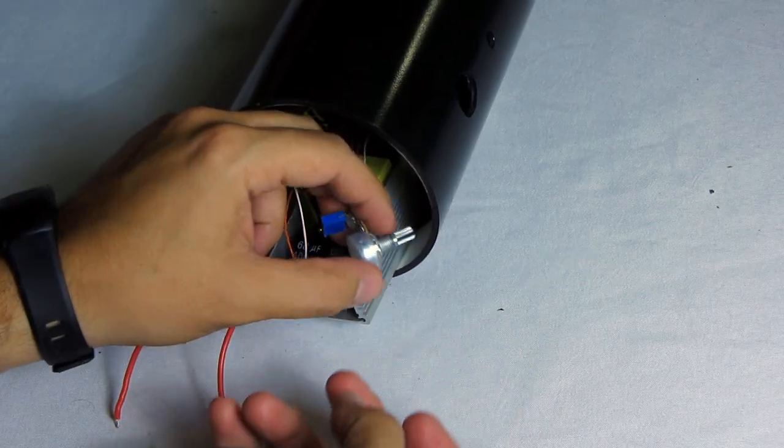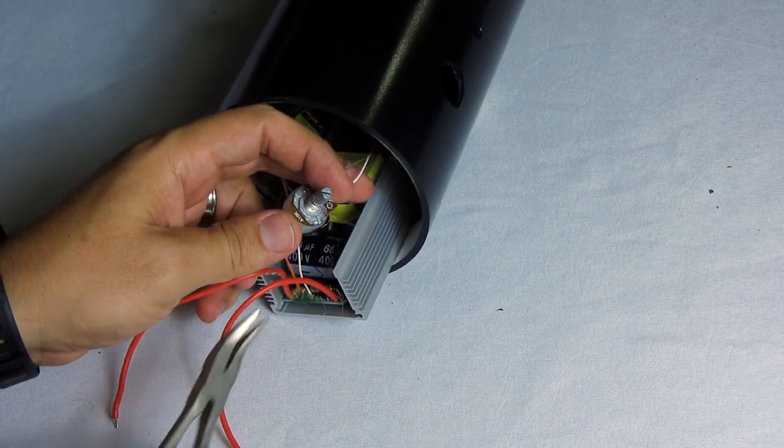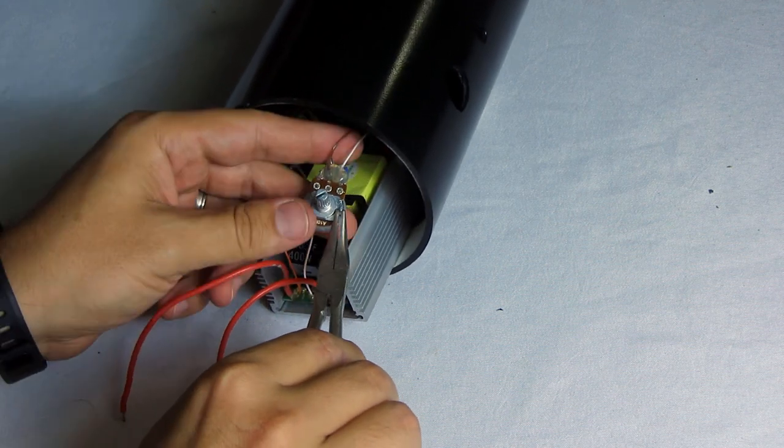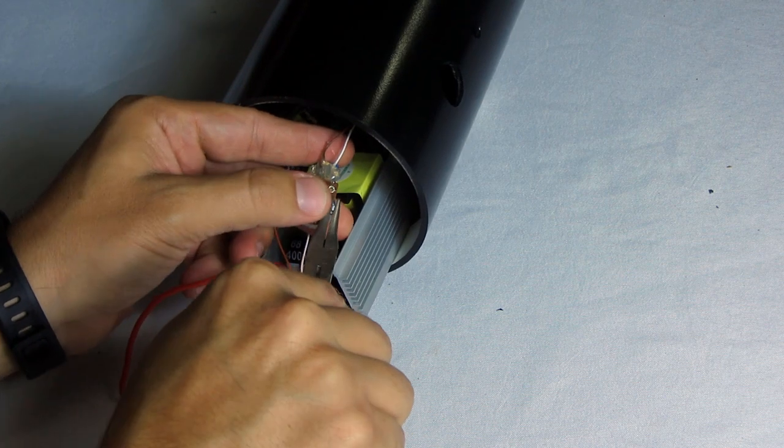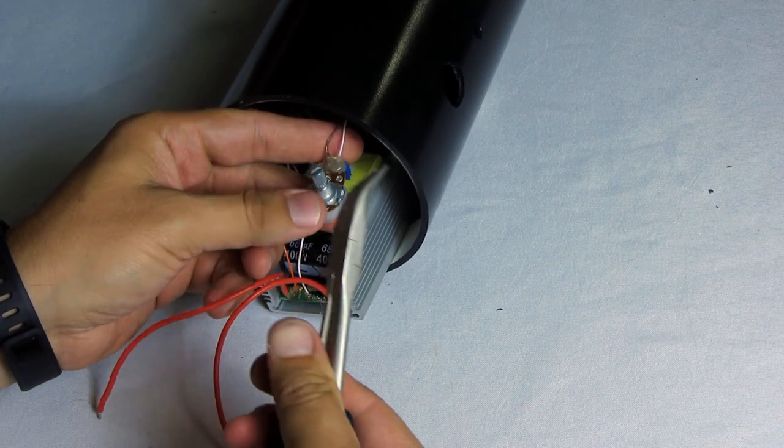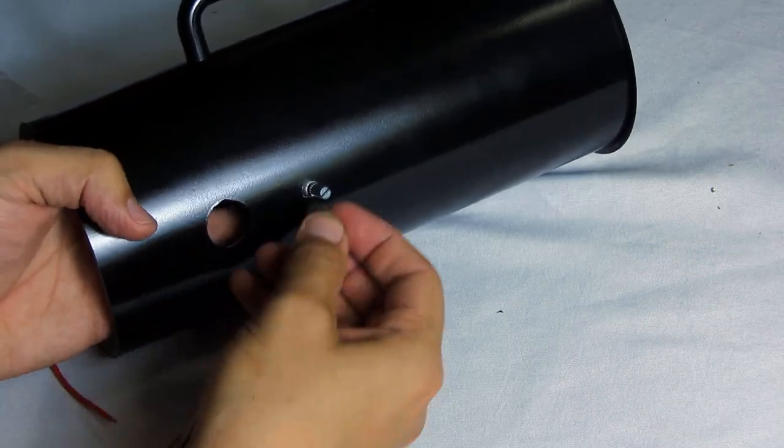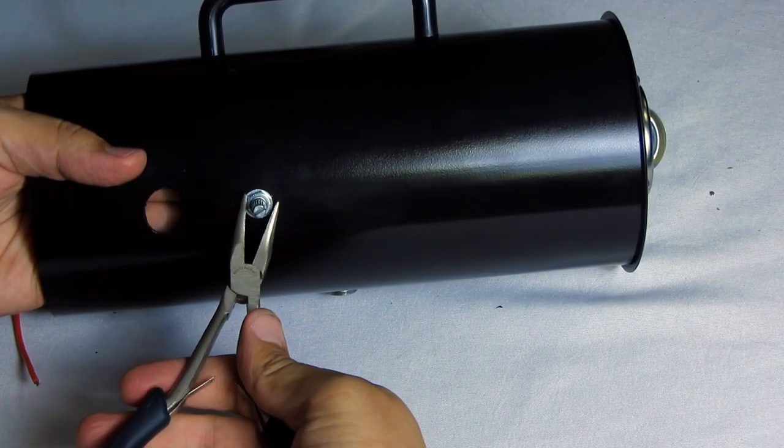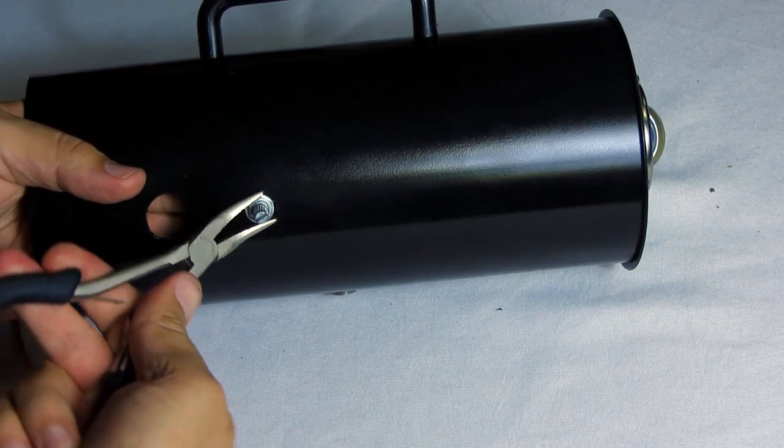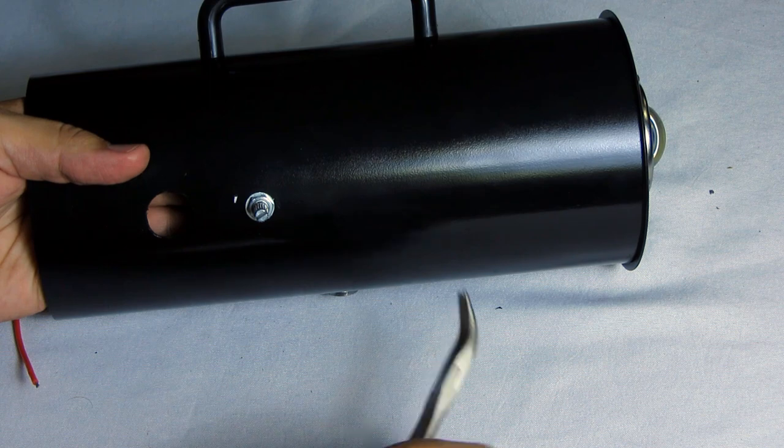Now we can move to the back of the light. The potentiometer comes with this tab on it, which is meant to keep it from twisting in place, but I didn't make a hole for it, so I'm just going to break it off. Feed it into the hole and put the washer and nut on and tighten it down. You should probably use the right tools for this so you don't scratch the fresh paint.